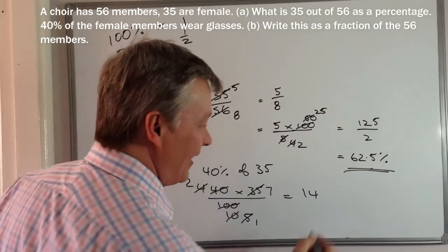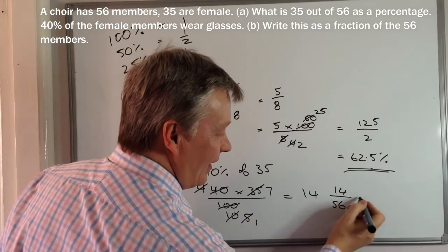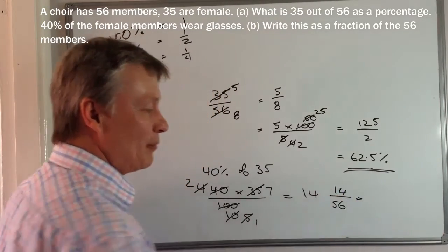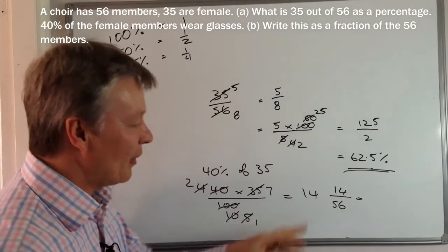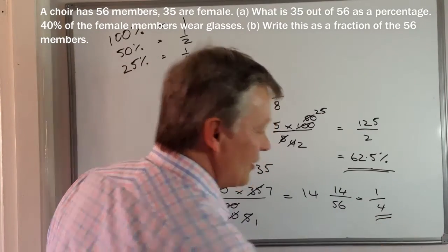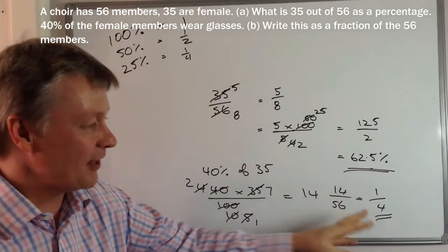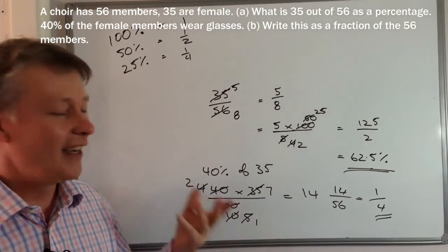So I've got 14 out of 56. Okay. I'm going to reduce that through. And if I divide through by 7, it becomes 2 over 8. If I divide through by 2 again, it becomes 1 quarter. So that's actually 1 quarter of the members of the choir wear glasses.